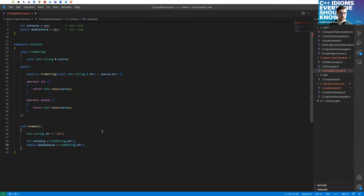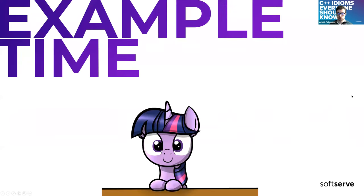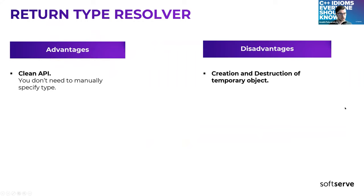Just look how clean it is — you don't need to worry about which method to use to convert. To sum up return type resolver: you get a really clean API, you don't need to manually specify the type as a client. But at the same time, you pay for the creation and destruction of some temporary objects, which may not be ideal.